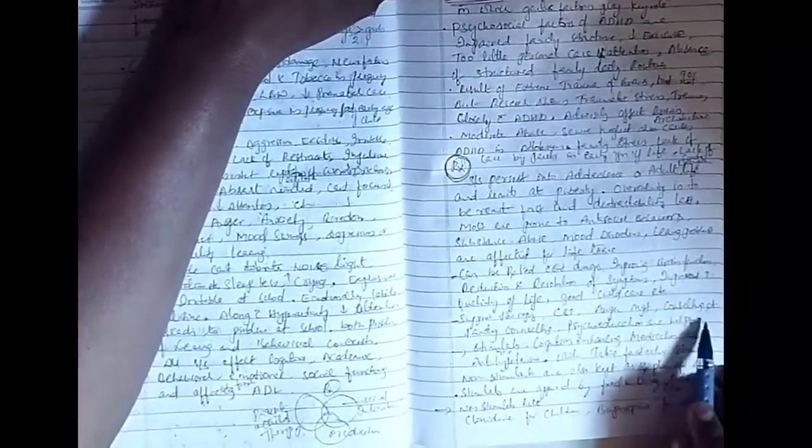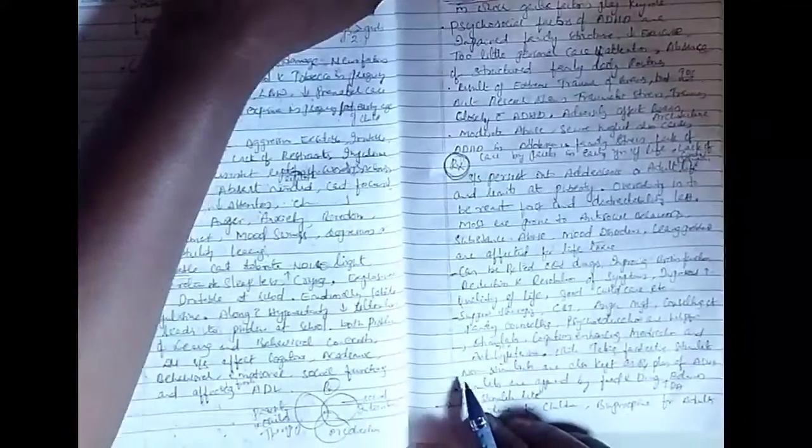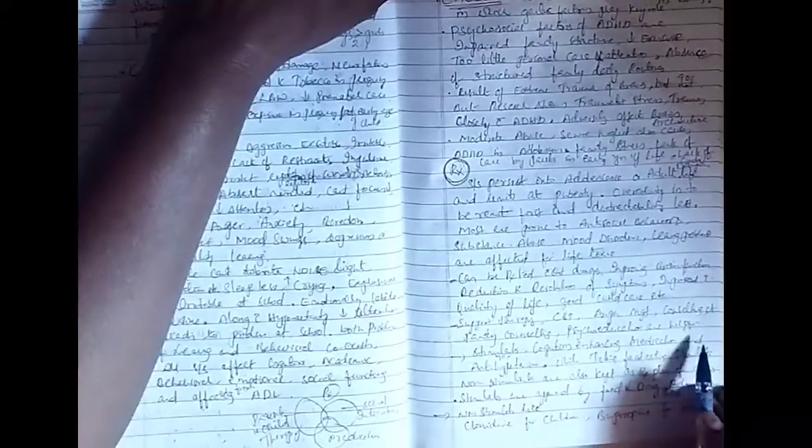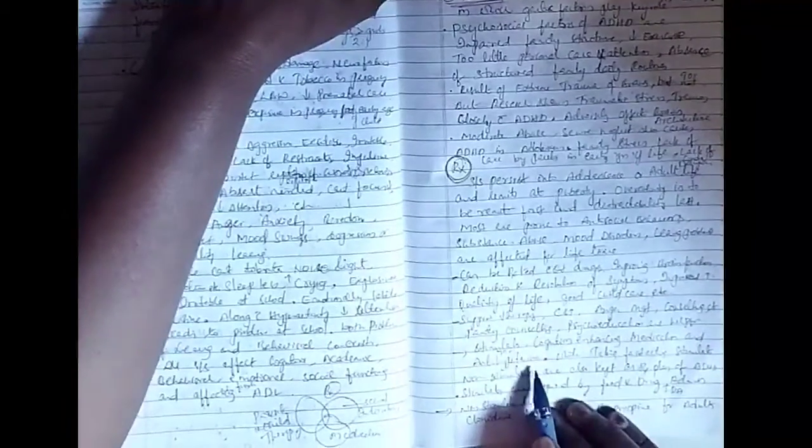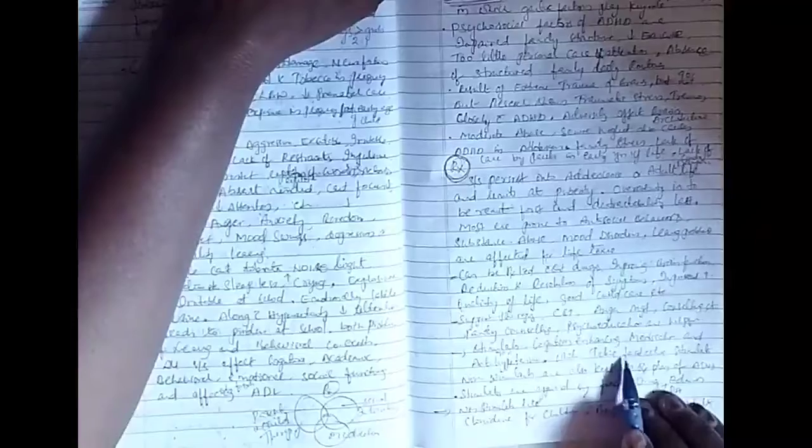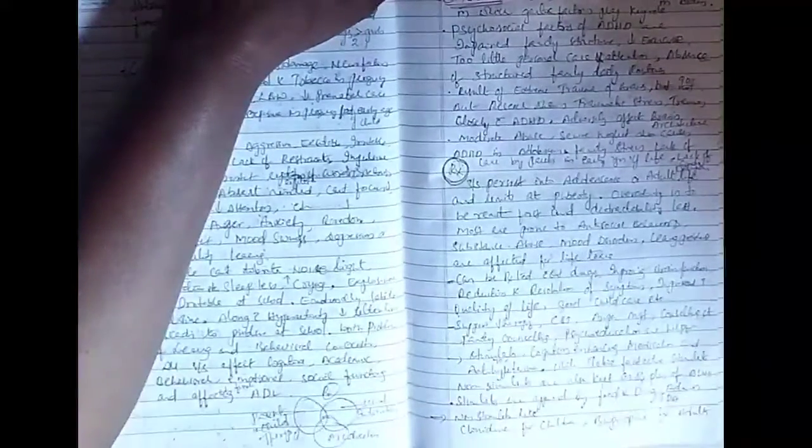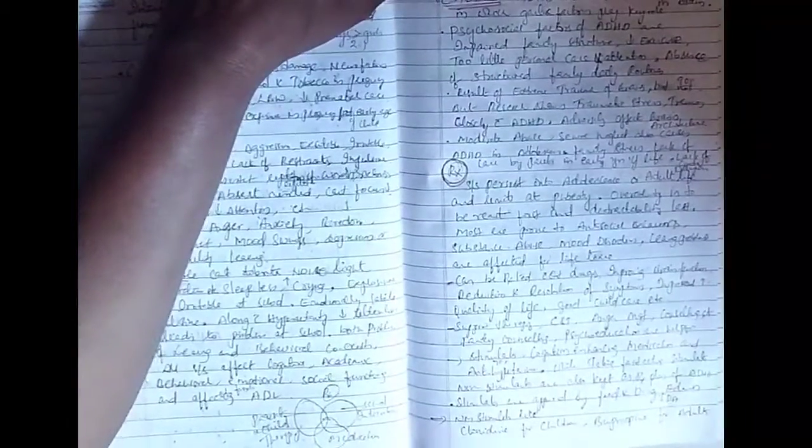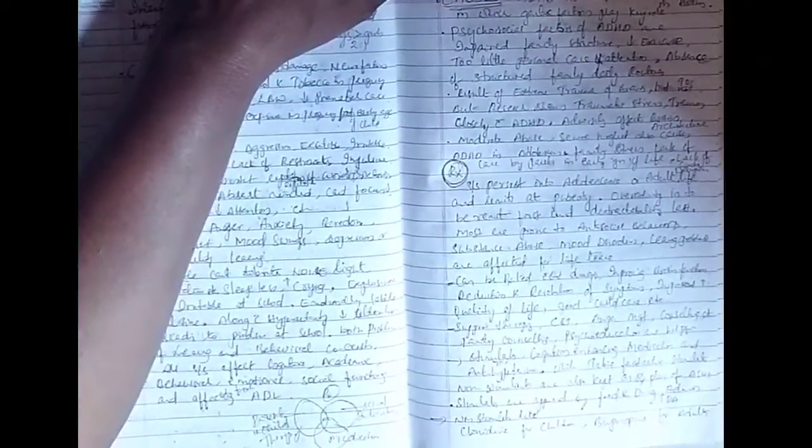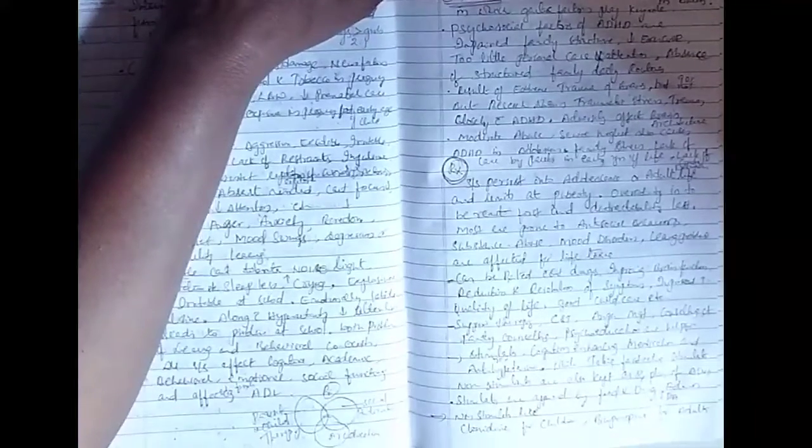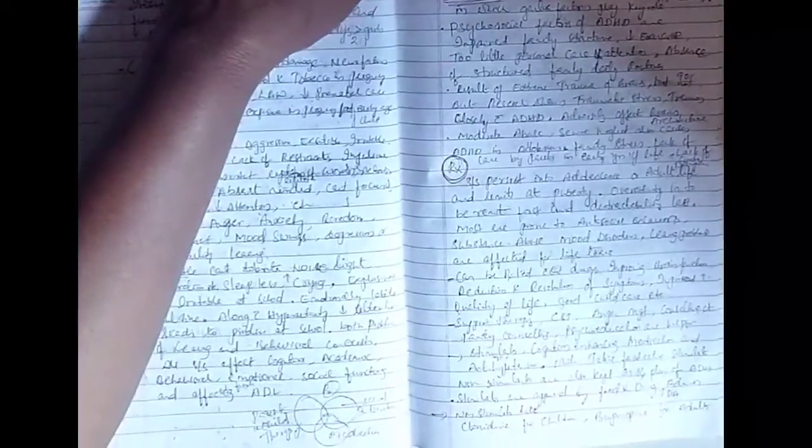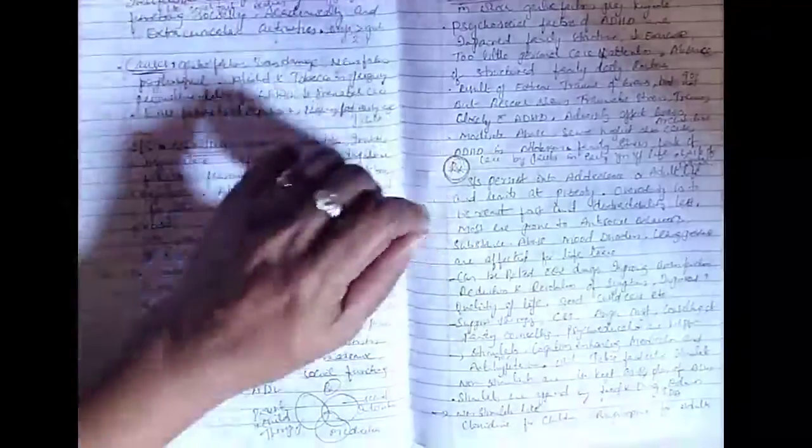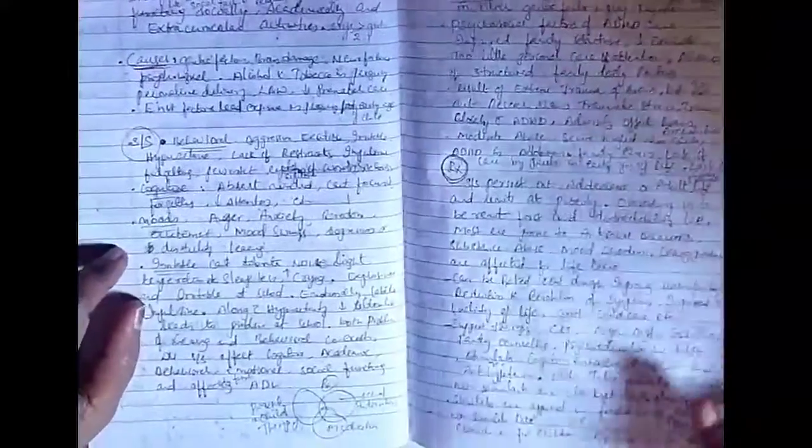All these are helpful in treating the child or adolescent. Stimulants and cognition-enhancing medications and antihypertensives while taking fast-acting stimulants. Non-stimulants are also kept as part of treatment plan for ADHD. The stimulants are approved by Food and Drug Administration or FDA. The non-stimulants which can be used for children is Clonidine and Guanfacine for adults to make them calm and relaxed.